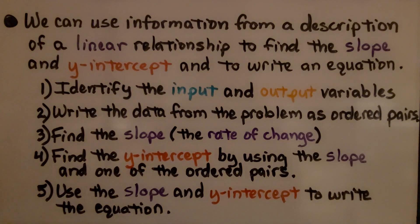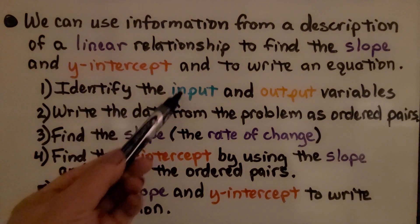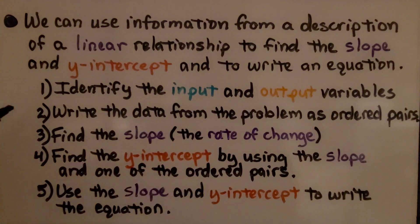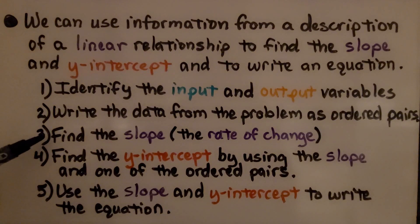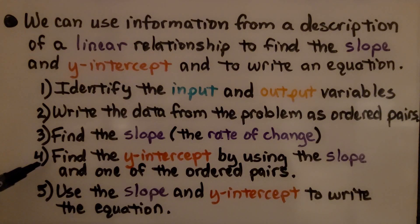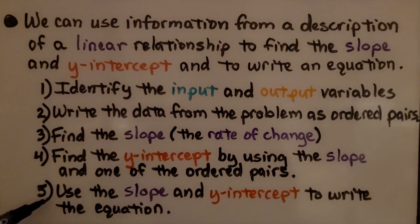First, we identify the input and output variables — that would be x and y. We write the data from the problem as ordered pairs. We find the slope, which is the rate of change. We find the y-intercept by using the slope and one of the ordered pairs. Then we use the slope and the y-intercept to write the equation.